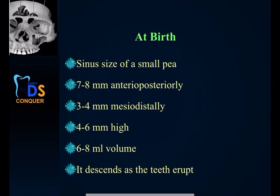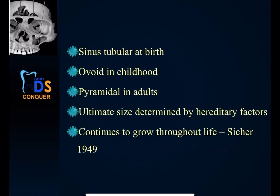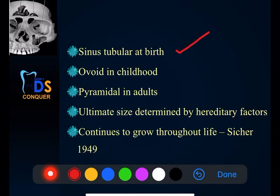At birth, it is the size of a small pea — about 7 to 8 mm antero-posteriorly, 3 to 4 mm medio-distally, 4 to 6 mm high, and 6 to 8 ml in volume. As the teeth start erupting, it descends downwards. Regarding shape: it is tubular at birth, ovoid in childhood, and pyramidal in adults. You need to mention these shapes of the maxillary sinus.